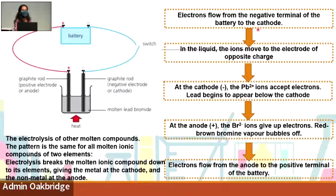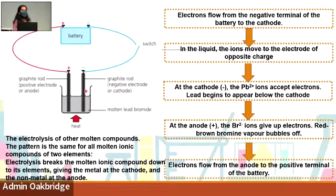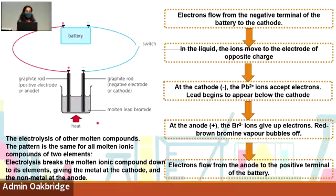Electrons flow from here through the wire. Once I switch on, my electrons start to flow, helping disperse the ions. My electrons move through the electrode and wire - anode to direct current, direct current to cathode. In the liquid, the ions move to the electrode of opposite charge - cation to cathode, anion to anode.